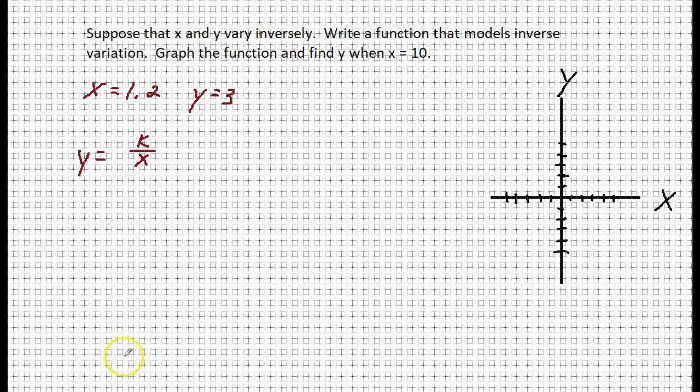Now I want this to be solved for k because we have to find k. So if we multiply both sides by x, we have that x times y is equal to k. So 1.2 times 3 equals k. Well, if I take 1.2 times 3, I am going to get 3.6. That is equal to k.